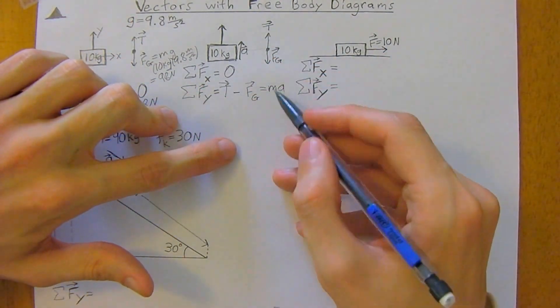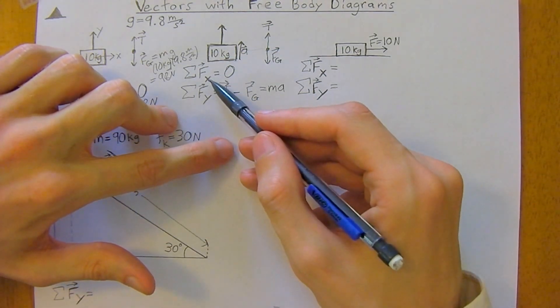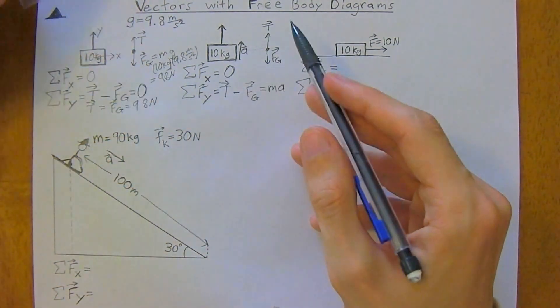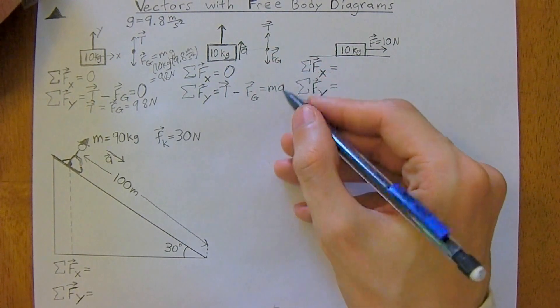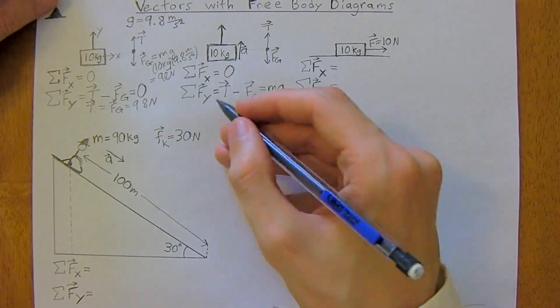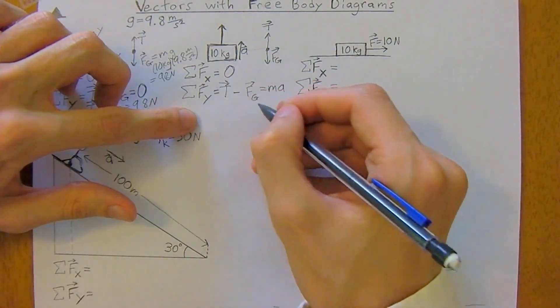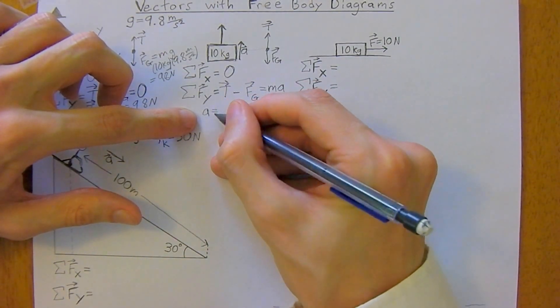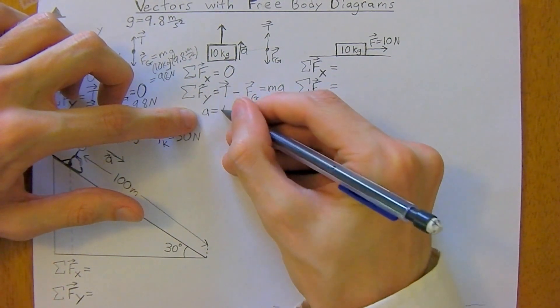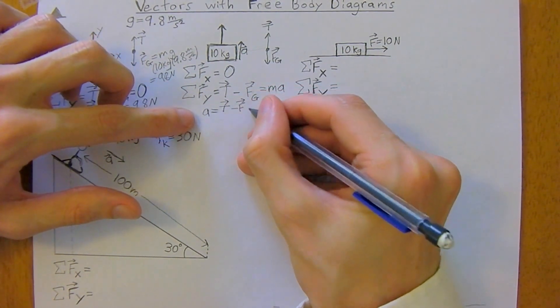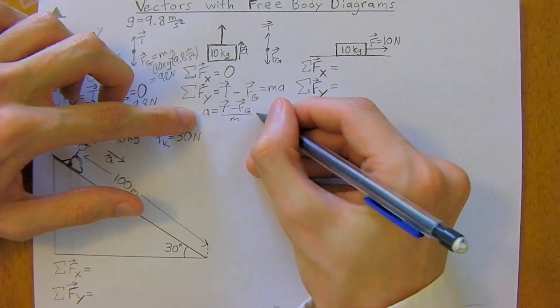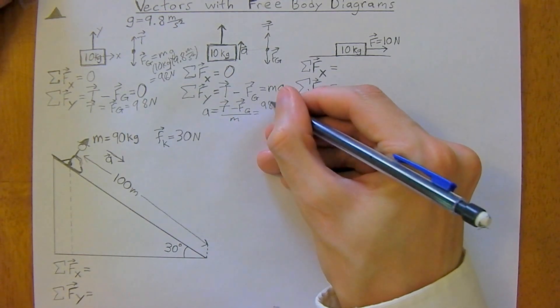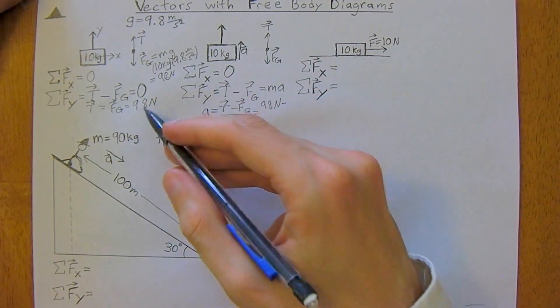So now, we have identified forces on the x-axis and the y-axis. And we could go through, say it's the same tension as the last example. So, say we want to figure out acceleration. It would be, we would just divide both sides by the mass. So, acceleration would be tension minus force of gravity divided by the mass. So, say it's the same tension as the past example. That would be 98 newtons minus force of gravity.